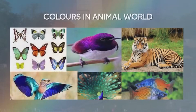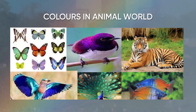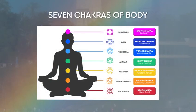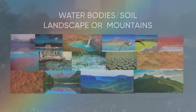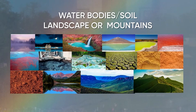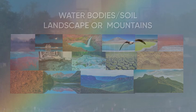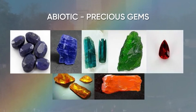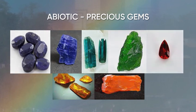Here are the seven colors in the animal world. Even the seven chakras of our body showcase the seven colors. Water bodies and landscapes — not just the biotic components — show colors. Take a look at those precious gems consisting of different colors.